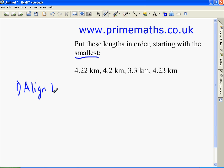Align the dots. So we do 4.22 kilometers, 4.20 kilometers. We add in the zero so we have the same number of decimal places, 3.30 kilometers and finally 4.23 kilometers.